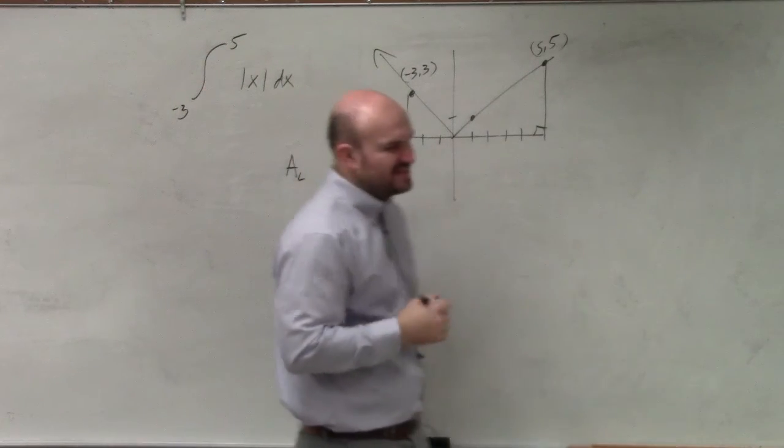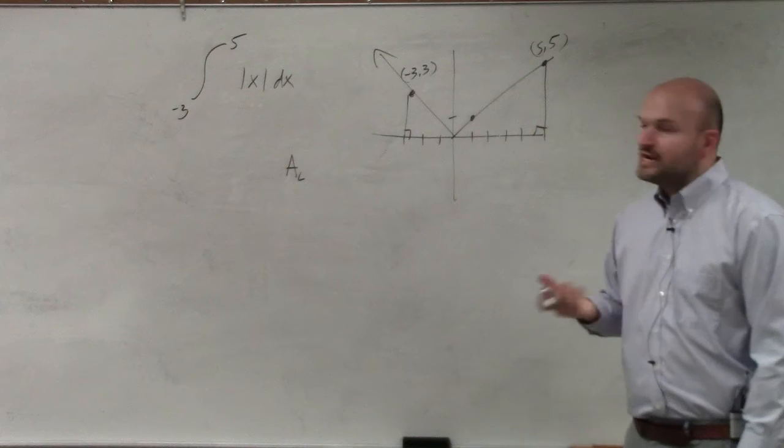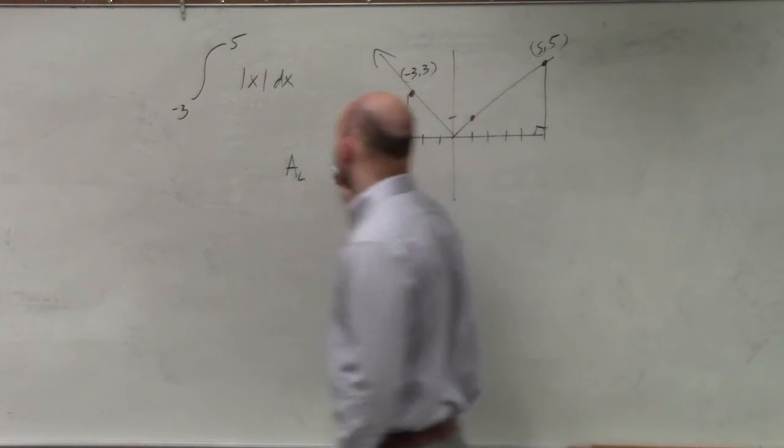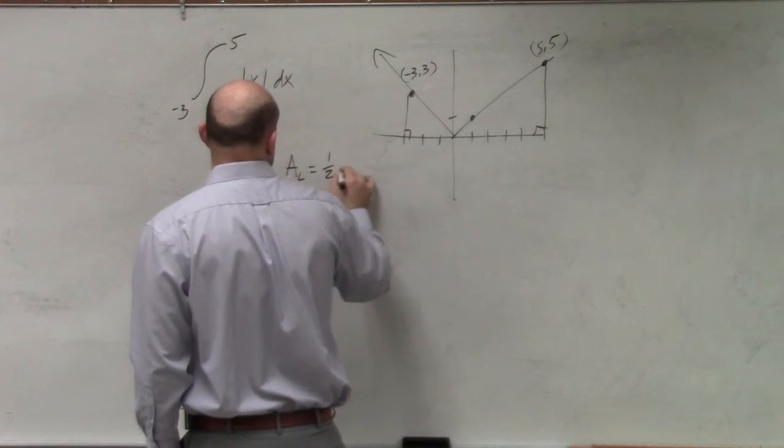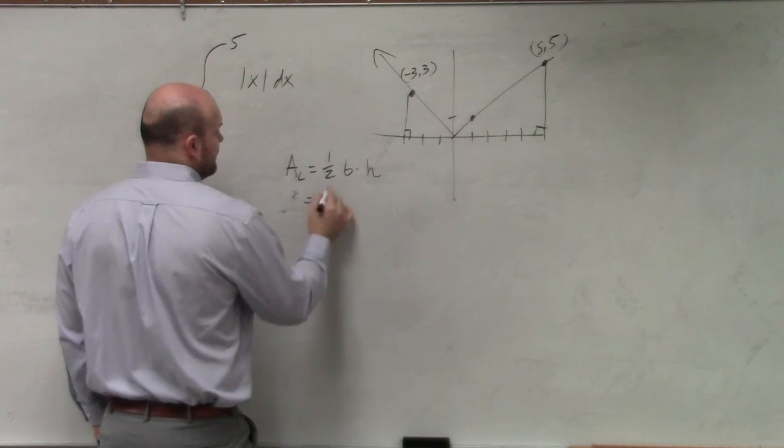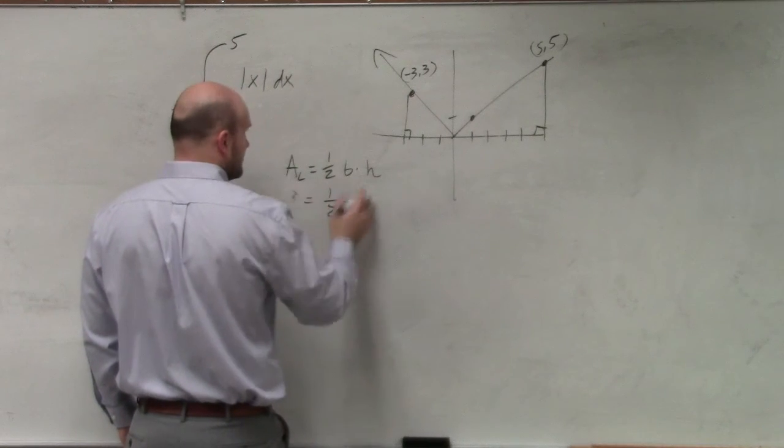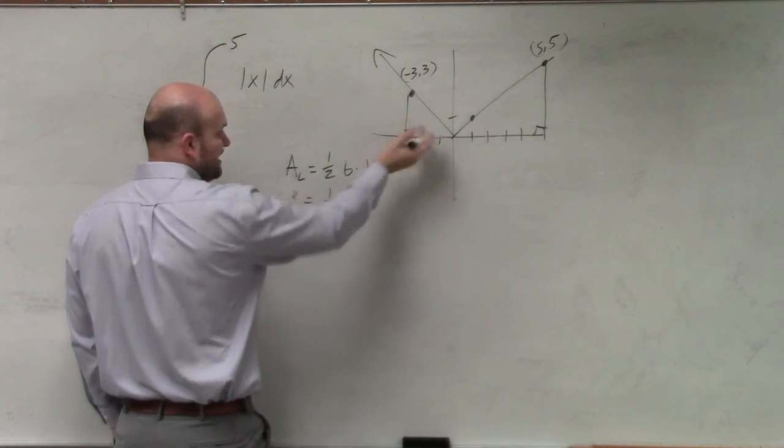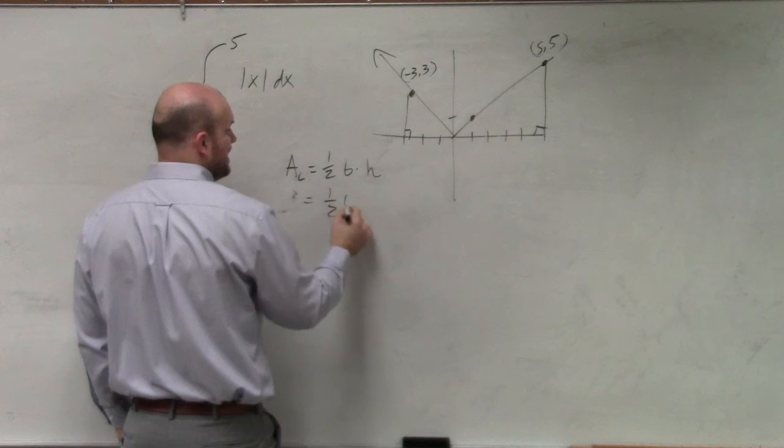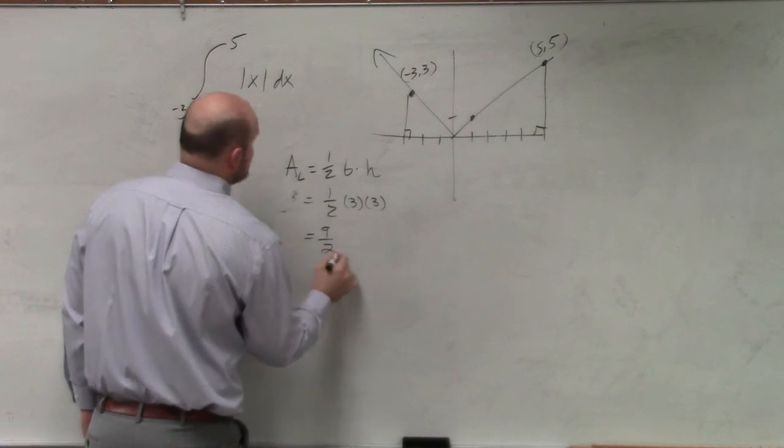So just to keep things different, I'm going to use subscript. So area of my left triangle with subscript L is going to be one-half base times height. Therefore, I have one-half. That's going to be negative three, but again, this is above the x-axis, so it's going to be positive, which is nine-halves.